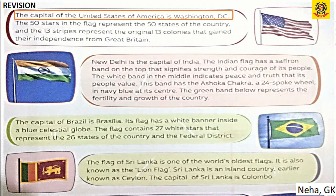New Delhi is the capital of India. The Indian flag has three colors: the saffron band on top signifies the strength and courage of its people; the white band in the middle indicates peace and truth. This band has an Ashok Chakra with 24 spokes in navy blue color at the center. The green band below represents the fertility and growth of the country.